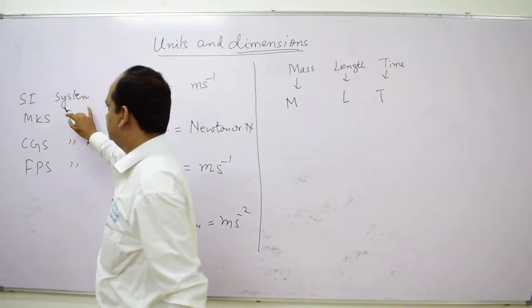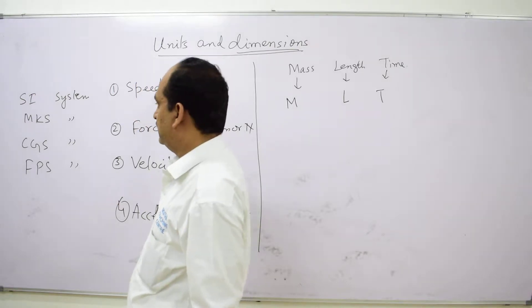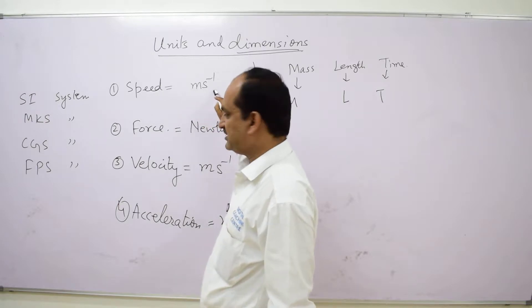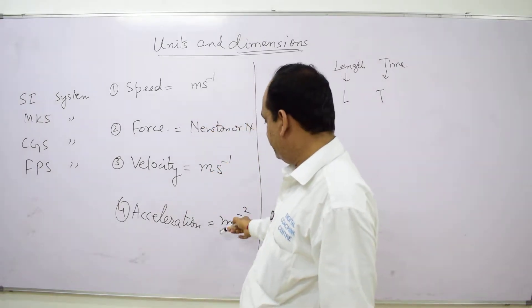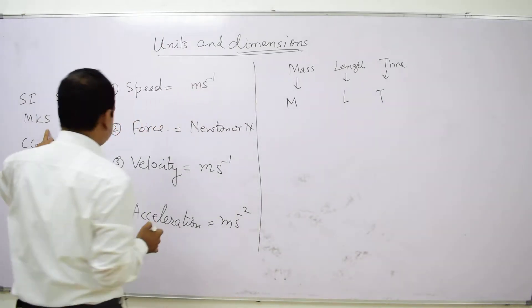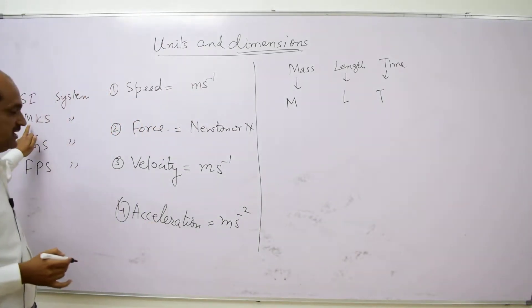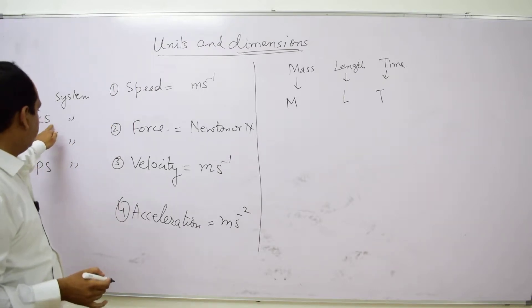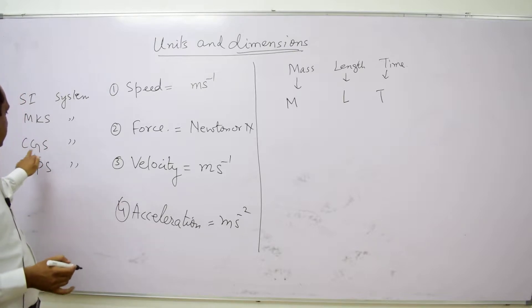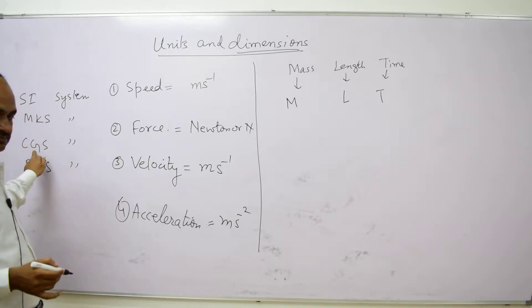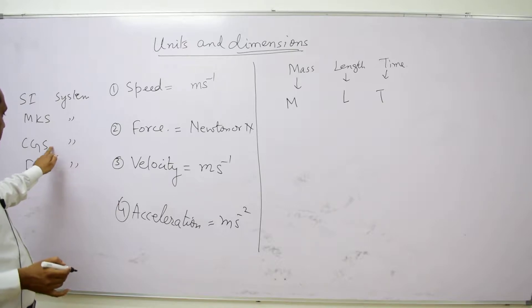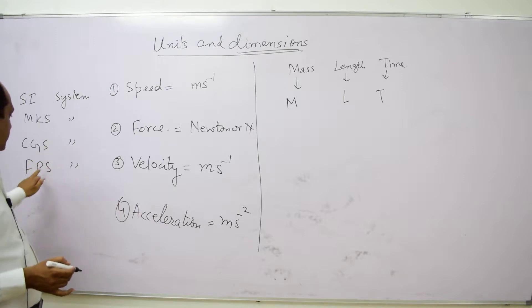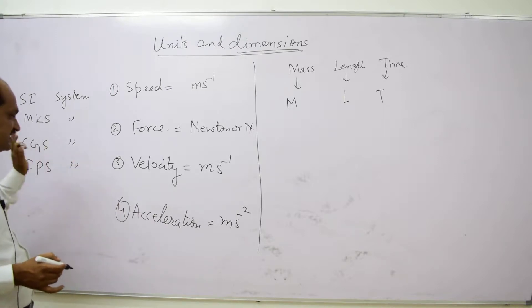In the MKS system, length is measured in meters, mass in kilograms, and time in seconds. In the CGS system, length is measured in centimeters, mass in grams, and time in seconds. In the FPS system, length is measured in feet, mass in pounds, and time in seconds.